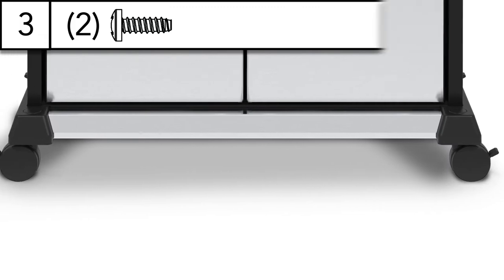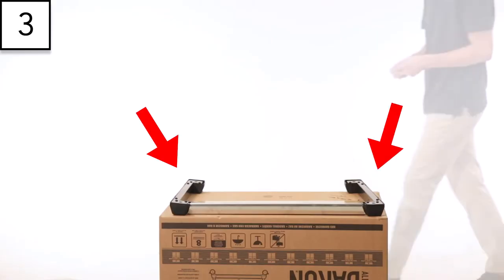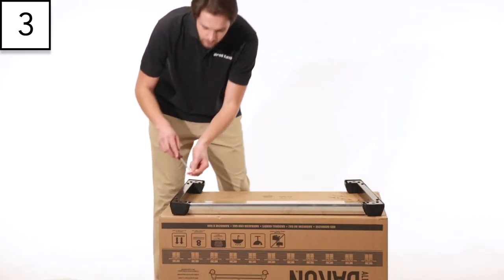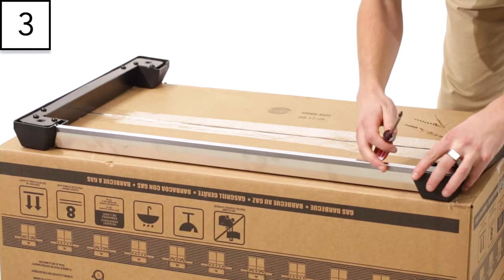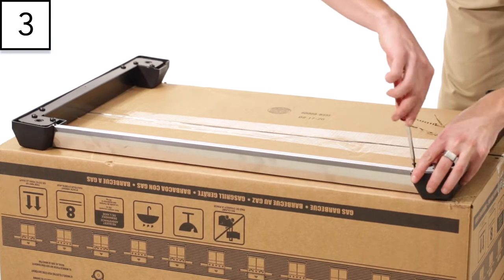Step 3. Build the caster bracket assembly. Lay out the left and right side caster brackets, then fasten the stainless steel base trim to the brackets. Each bracket is contoured to connect with the trim piece.